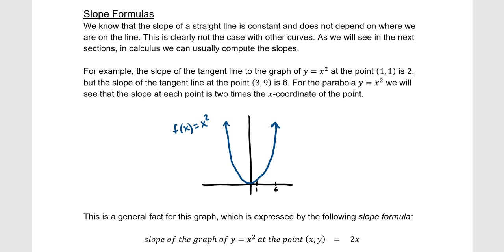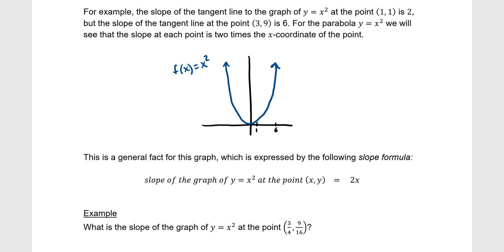For slope formulas: the slope of a straight line is constant and does not depend on where we are on the line — the slope is always the same. This is obviously not the case for other curves, where the slope is not constant. For example, the slope of the tangent line to y = x² at the point (1, 1) is 2. We can draw that tangent line with slope 2 at that point.